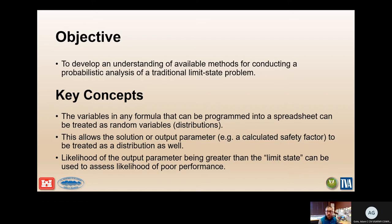Key concepts include that variables in any formula or problem can be programmed into a spreadsheet and treated as random variables with probability distributions. The distributions can be as simple as a bell curve based on a reasonable low value, a best estimate, and a high reasonable value of that variable. This allows the output parameter — for example, the calculated factor of safety — to be treated as a distribution as well. Essentially, if your inputs are distributions, your output will be one too.